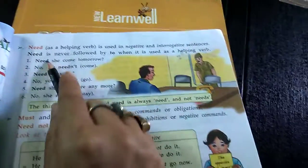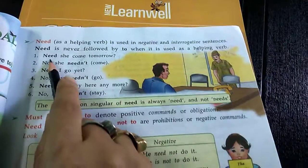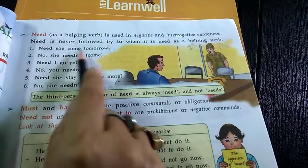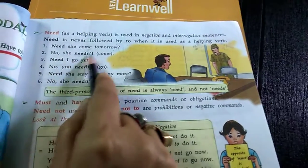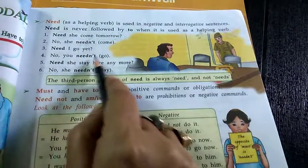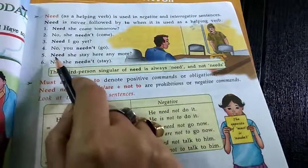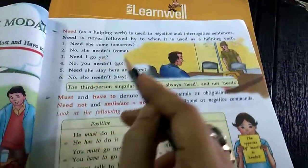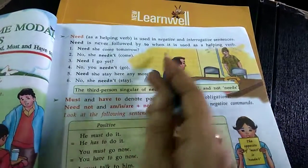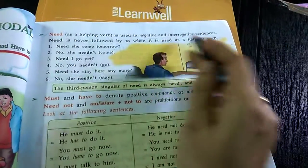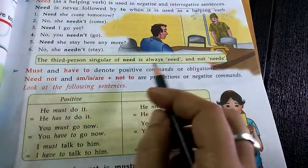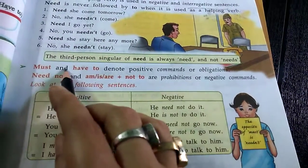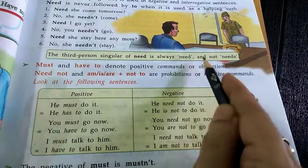Need, as a helping verb in negative sentences, is never followed by 'to'. It is used in interrogative and negative sentences. Examples: Need she come tomorrow? No, she needn't come. Need I go yet? No, you needn't go. Need she stay here anymore? No, she needn't stay. The third person singular of need is always 'need' and not 'needs'.